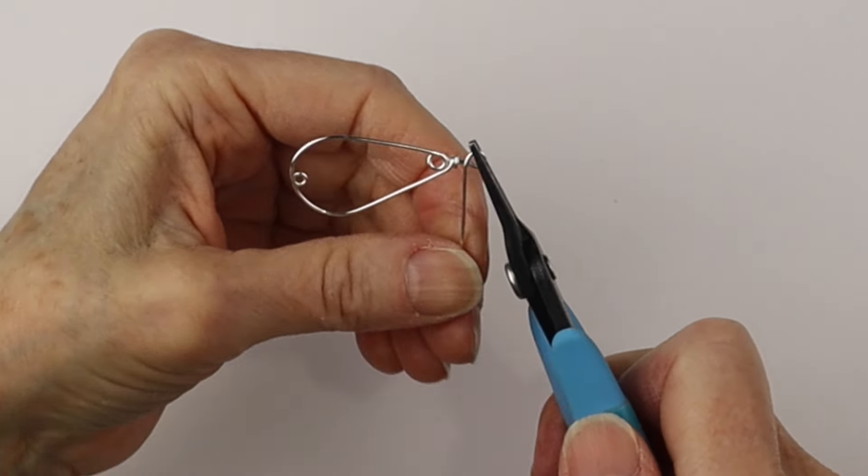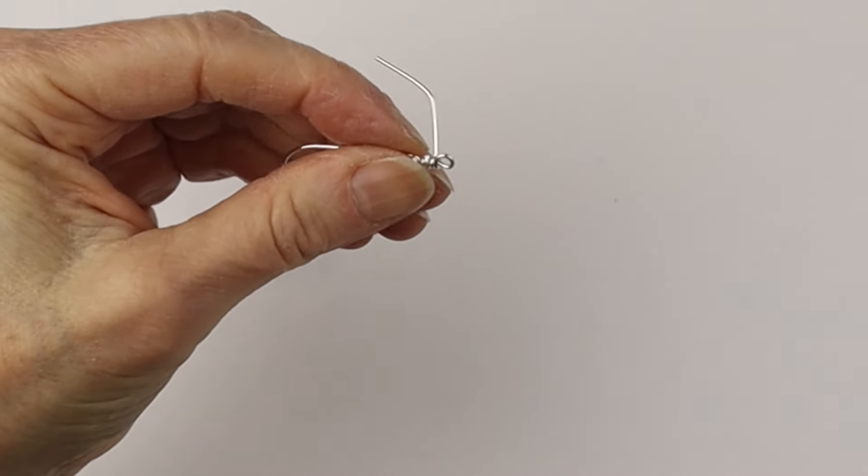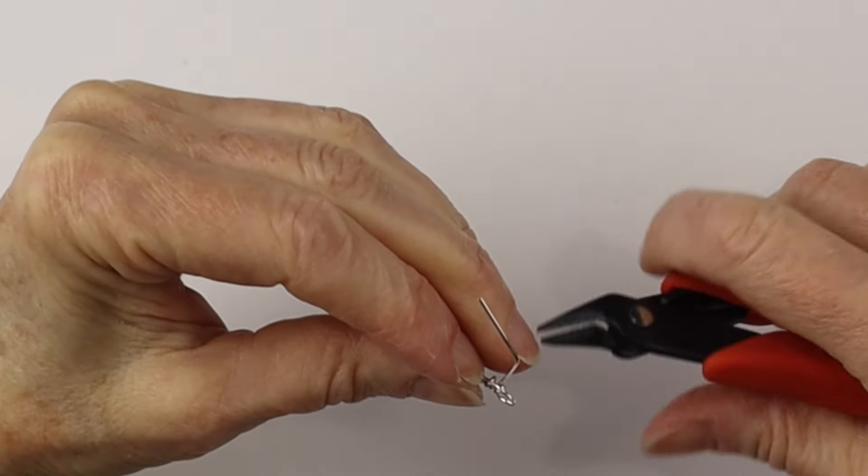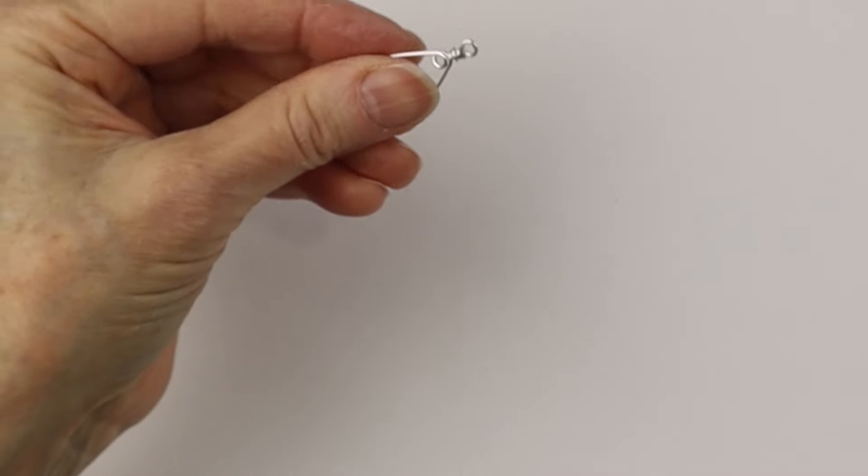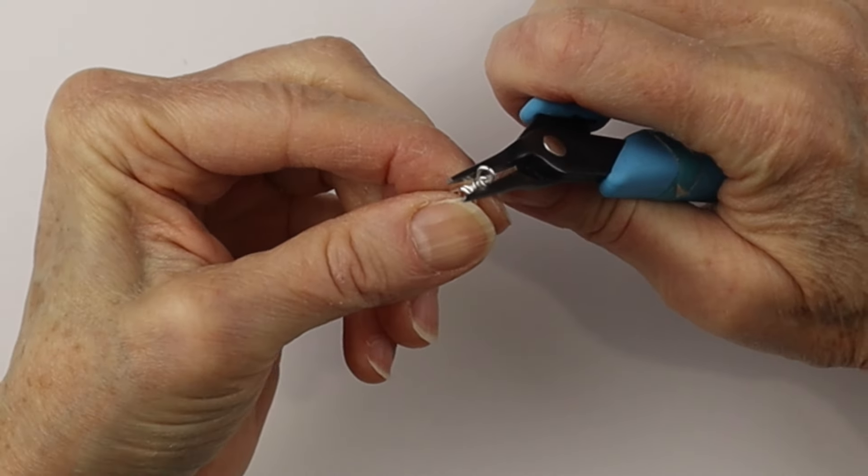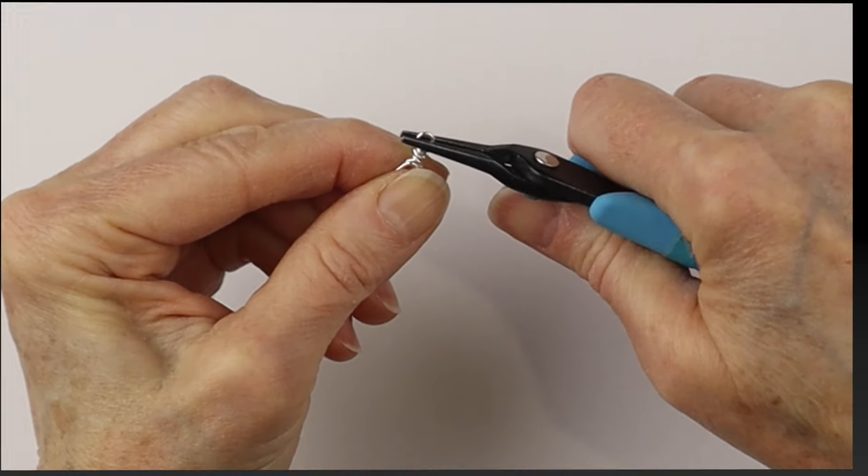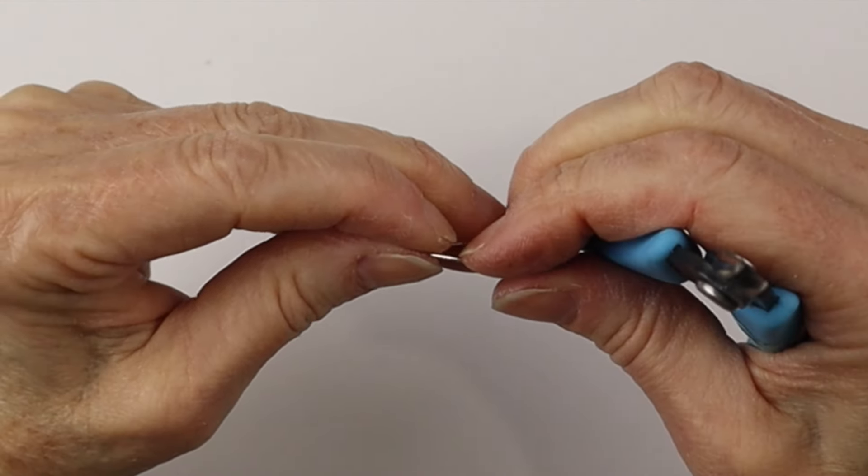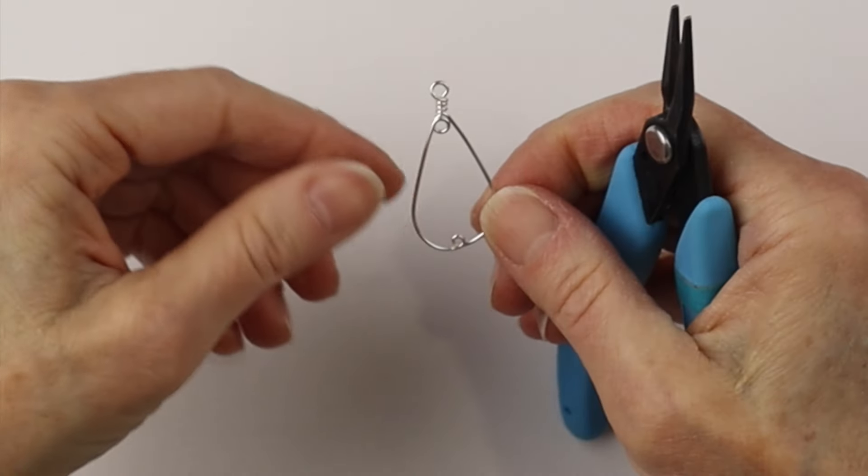Hold it with the flat nose pliers, bend that little end around, and clip the wire flush at the back. Now you can pinch in the pokey ends. These are the Xuron tweezer nose pliers. They're very handy for just pushing in the end of the wire. Smooth out the teardrop so it's straight, and there we have our basic shape.